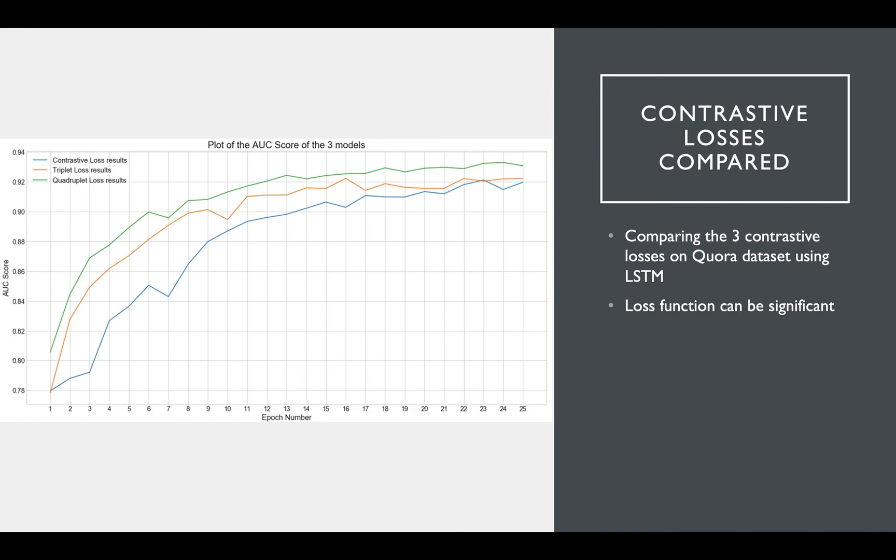In this particular case, we see that the triplet loss and quadruplet loss converged more aggressively than the pairwise contrastive loss. It does look like the pairwise contrastive loss was able to eventually converge to a similar AUC as triplet loss, but quadruplet loss did perform a little bit better in this example.